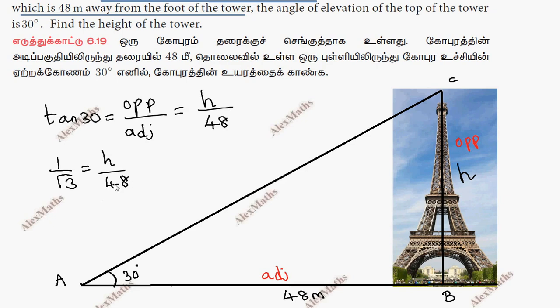If we cross multiply, 48 by root 3 is equal to h. So h equals 48 by root 3, which is 16 root 3 meters.